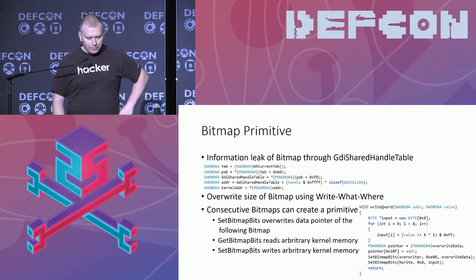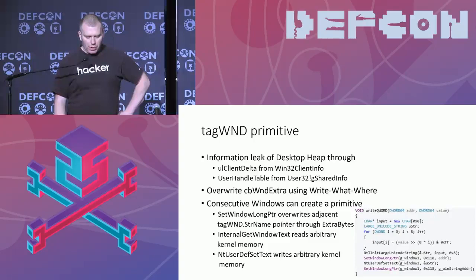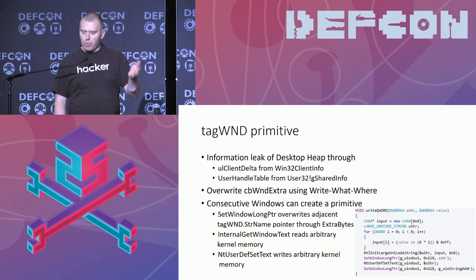Similarly, we can use the window primitive. We leak the address of the window, this time using another table called the user handle table, overwrite the size of what's called the extra bytes, and then use the SetWindowLongPointer API to change these extra bytes. Since we overwrite the size of the extra bytes, we can actually change the pointer for the string pointer of the window, which allows us to read or write anywhere in memory using user-mode APIs.